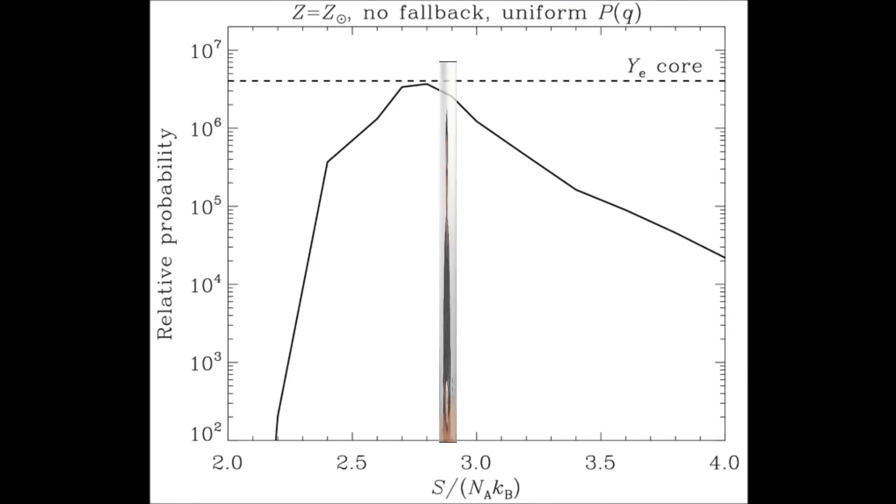Since models with no fallback are preferred, the mass coordinates within the progenitors are assumed to be the neutron star masses. This figure shows with solid line the relative probability as a function of the entropy of the muscat leading to the neutron star. We see that there is a clear maximum at an entropy of about 2.8 kB per baryon.